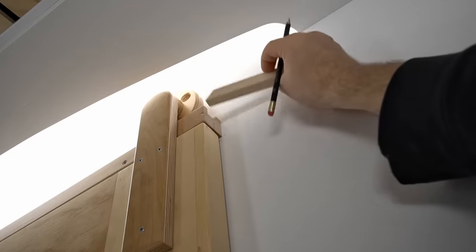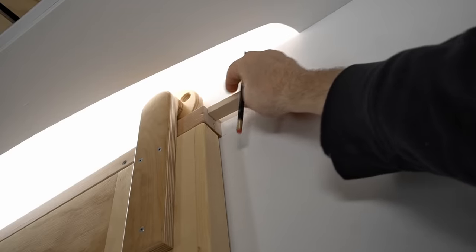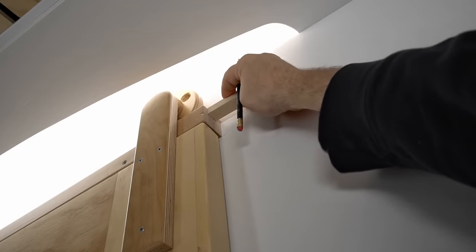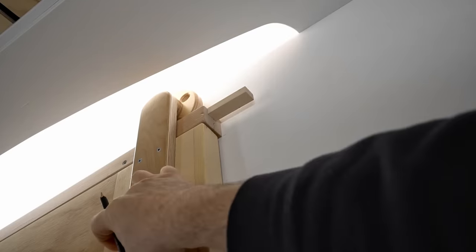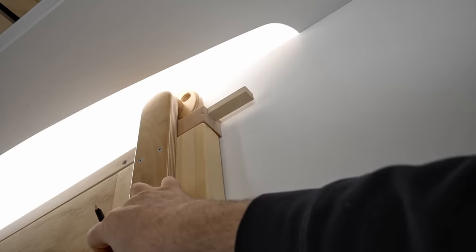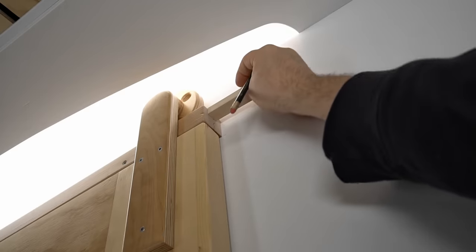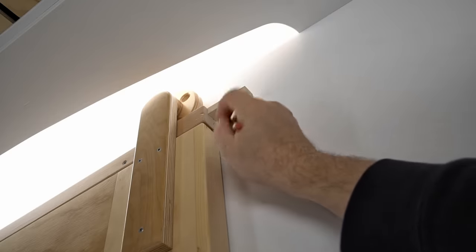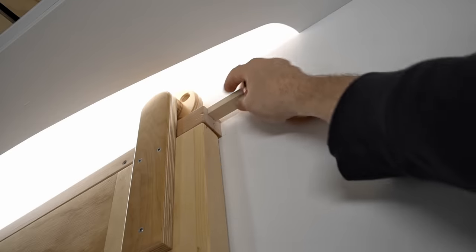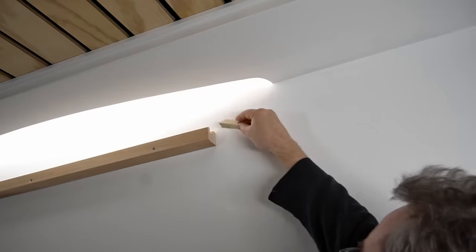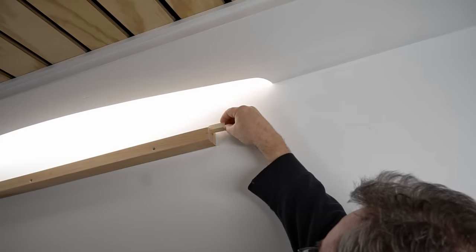One last thing to do is to add stops to the ends of the track. And these are very simple. These are just pieces of the same maple as the track that are cut on an angle on the end, so that stops the wheel as it rolls over. I'm going to glue that in here and I'll do the same on the other end.